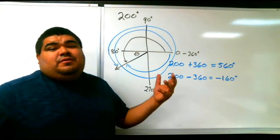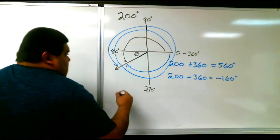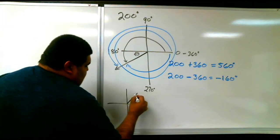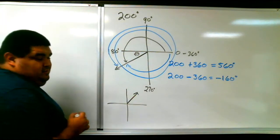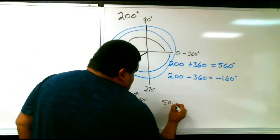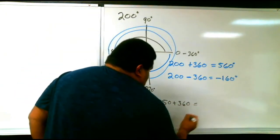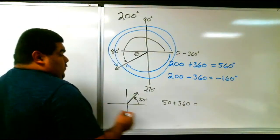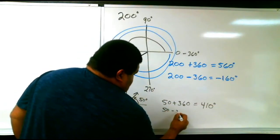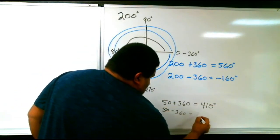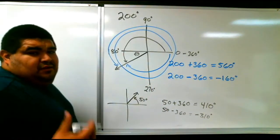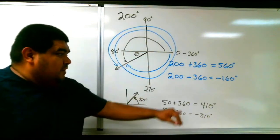So if I were to give you 50 degrees, obviously we're going to graph it. 50 degrees will be about here. So we will say 50 degrees plus 360 equals 410 degrees and 50 minus 360 equals negative 310 degrees. And that's it. That's all we're doing. Just adding and subtracting 360.